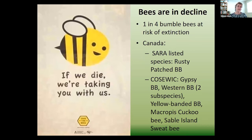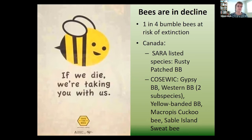Bees are in decline. You may have seen the Albert Einstein quote that if they die we're gone in four years — that's not necessarily true, but a lot of our bees are in serious trouble and that has repercussions as we try to produce insect-pollinated food. About one in four bumblebees are at risk of extinction. We already have one bee — the rusty-patched bumblebee — listed, and we have six up for consideration. Our baseline information on them is pretty limited, so it's challenging to figure out whether they're declining in areas where they haven't been surveyed for a hundred years.